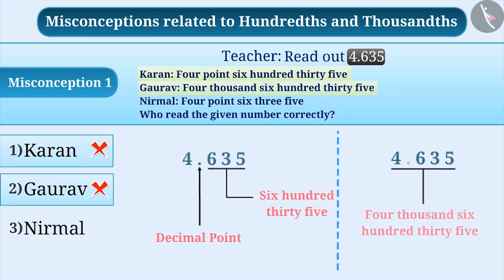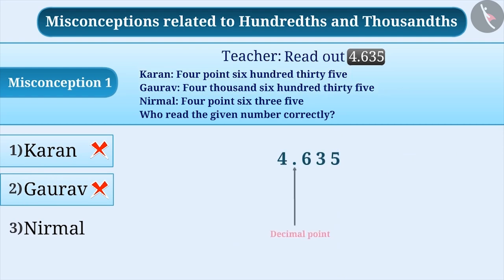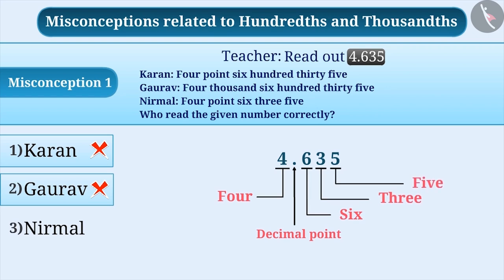The correct understanding is that the digits to the left of the decimal point are read as a whole number, but it is incorrect to read the digits on the right side of the decimal point as a whole. We only read the digits after the decimal point. Therefore, the given number is read as 4.635. Thus, Nirmal has read it correctly.